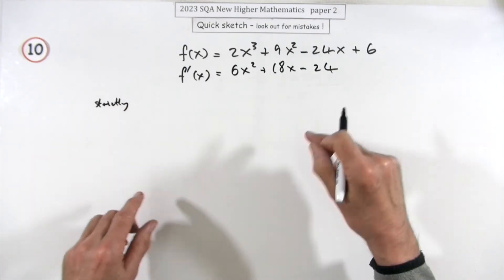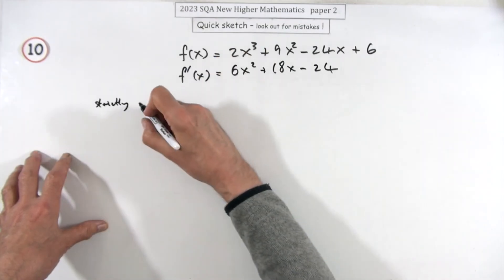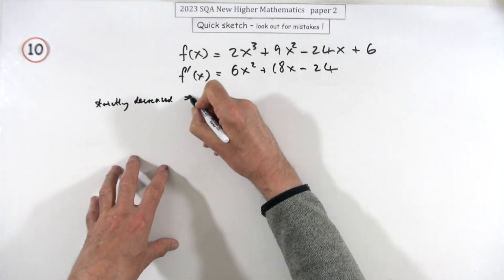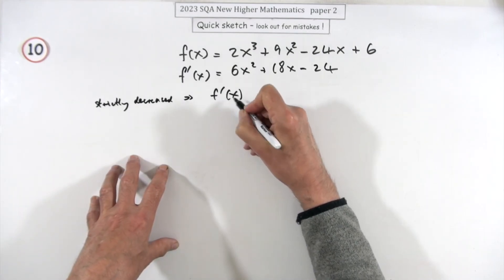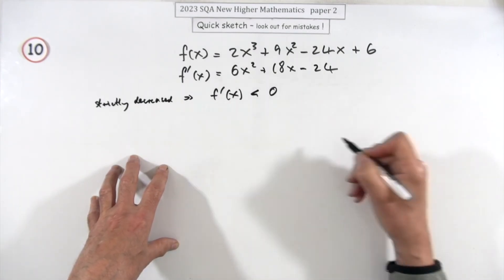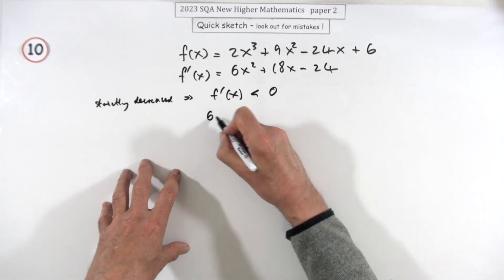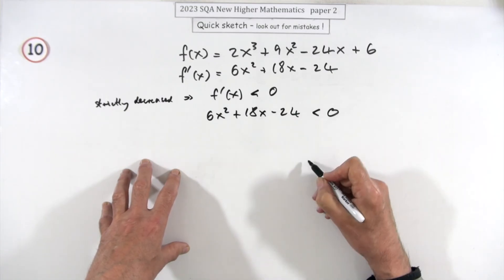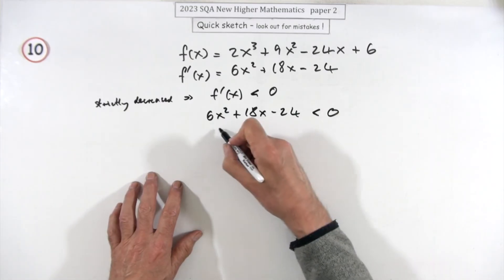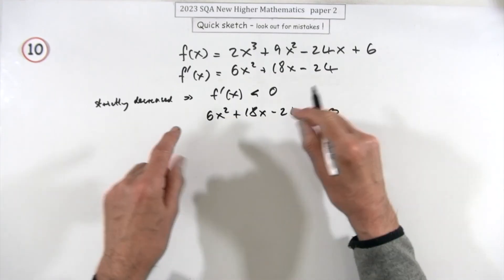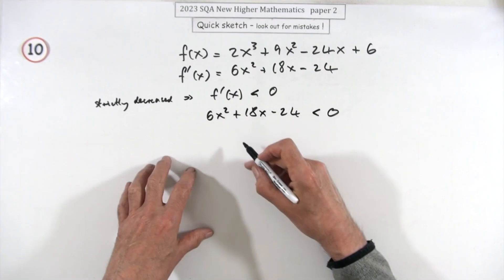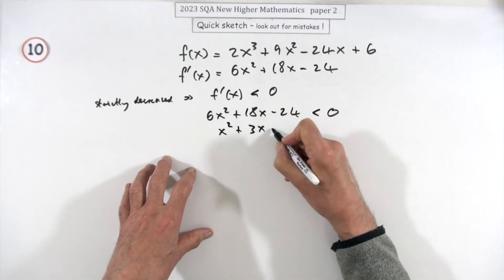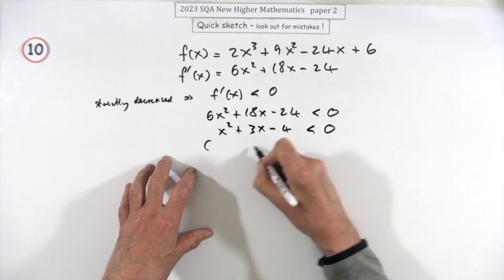So strictly decreasing, that means always going down, no rests involved, no gradients equal to zero. Strictly decreasing, just you keep going down, means that that derivative, the gradient, has to be less than zero. So what you've got is a quadratic inequality. Then you've got 6x² + 18x - 24 is less than 0. I'm just going to take out the 6 because I'm not going to use that again to find any values, so that just leaves me with x² + 3x - 4 has to be less than 0.